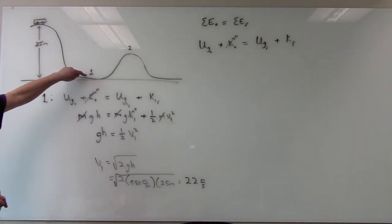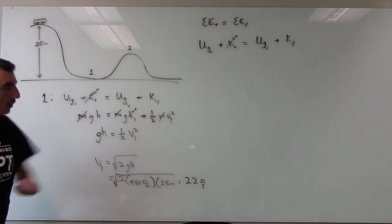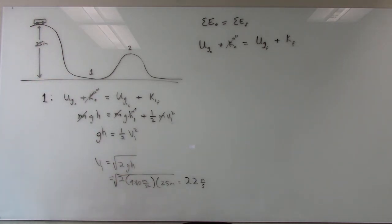So at this spot when the roller coaster comes down from that first hump it will be going at approximately 22 meters per second. Now let's do for position 2.